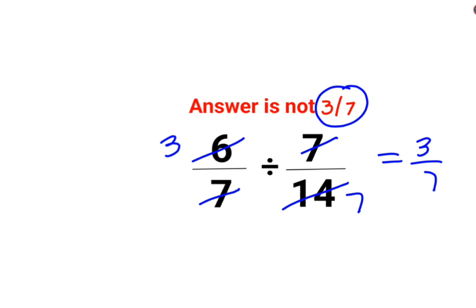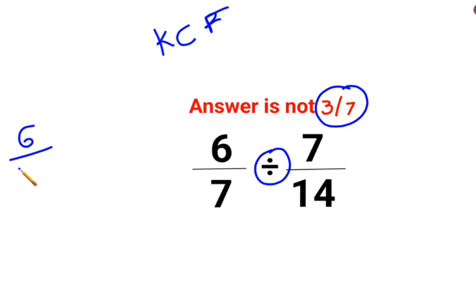Unfortunately, that is not how this works. Now let's understand why. First, very important thing you need to realize is that whenever you have a division working, you need to follow the rule of KCF where K stands for keeping the first fraction as it is, C stands for changing the division sign to multiplication, and F stands for reciprocal of 7 upon 14 which is 14 upon 7.